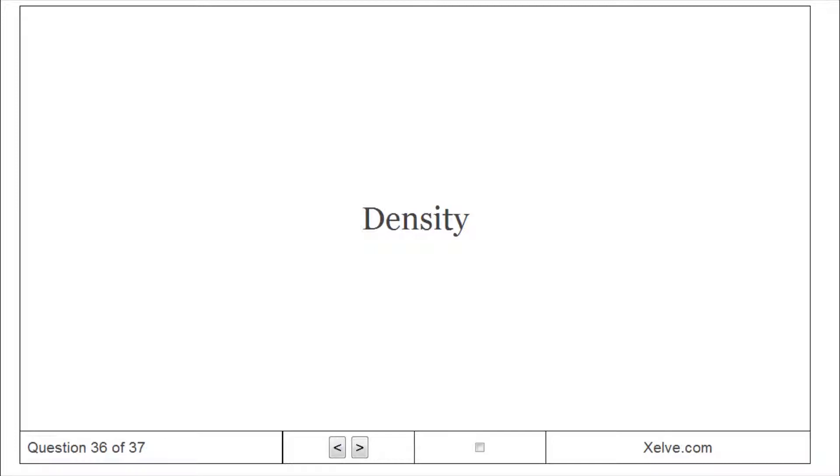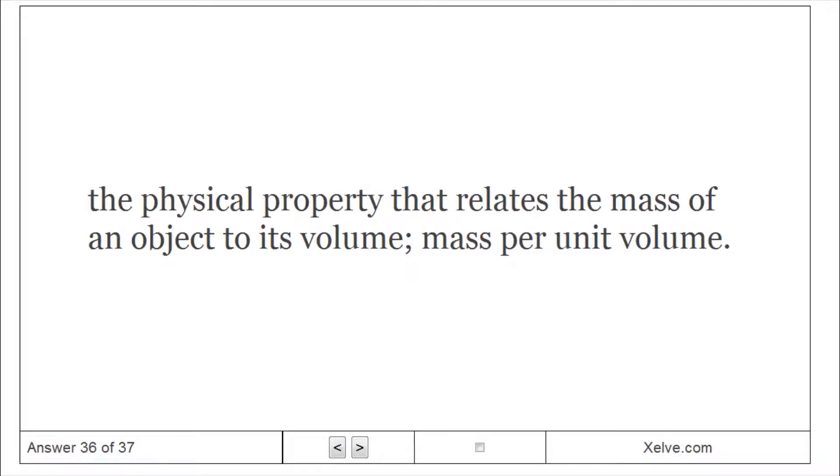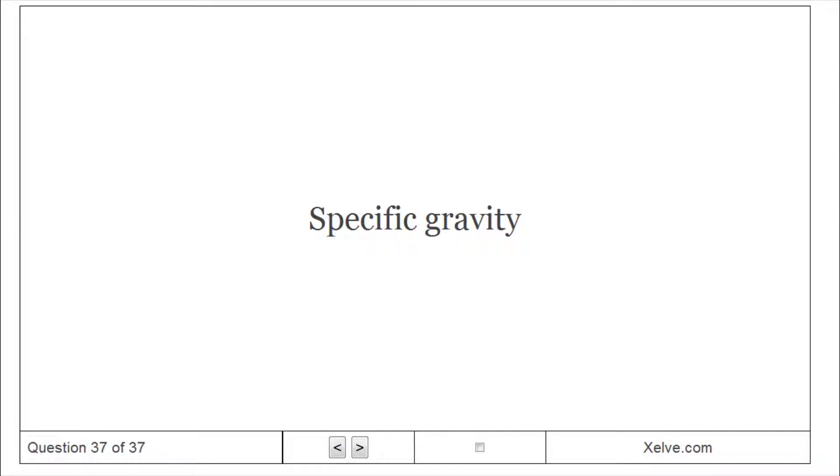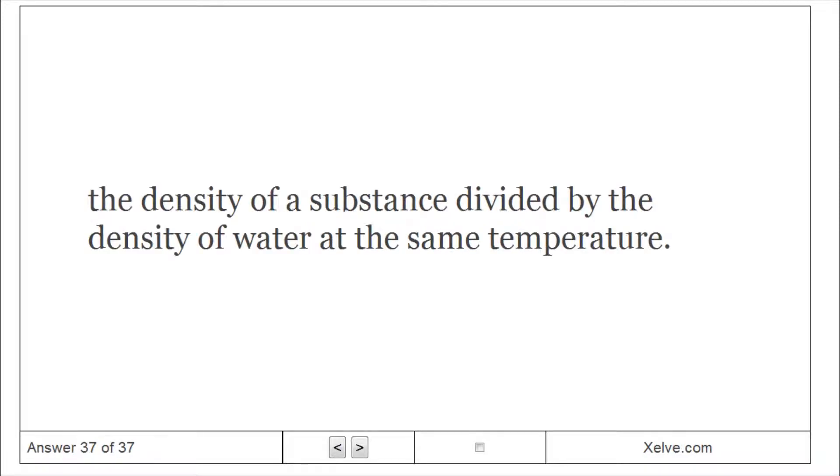Density: The physical property that relates the mass of an object to its volume, mass per unit volume. Specific Gravity: The density of a substance divided by the density of water at the same temperature.